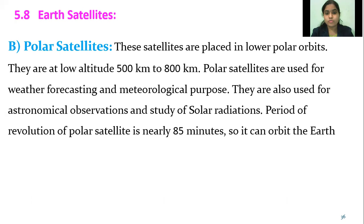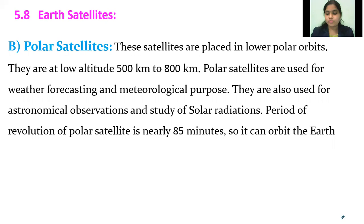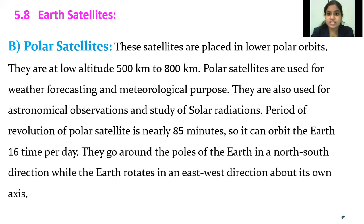Polar satellites are the second type of artificial satellite. These satellites are placed in lower polar orbits — between the north pole and south pole — at low altitude of 500 km to 800 km. They are used for weather forecasting and meteorological purposes, as well as for astronomical observation and study of solar radiation from the Sun and study of other planets and stars. The period of revolution of a polar satellite is 85 minutes.